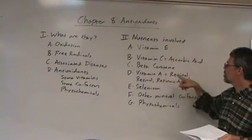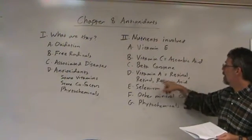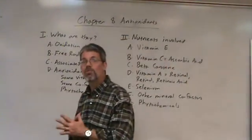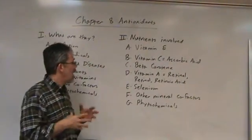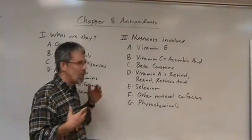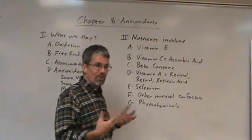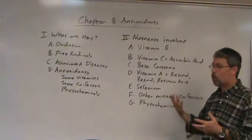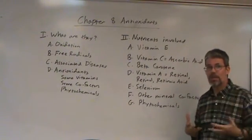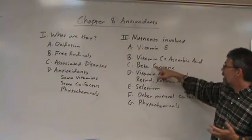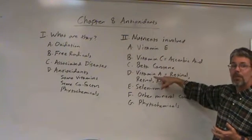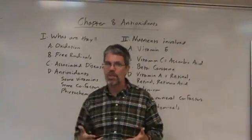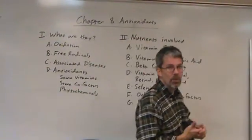Vitamin A, also known as retinol or retinoic acid, is involved in antioxidant function and also in vision. Vitamin A deficiency can lead to night blindness or even permanent blindness in severe cases. Vitamin A is also important for skin health and epithelial tissue health. Beta-carotene is a dietary source of vitamin A, but vitamin A is also found in pre-formed fashion in animal-derived foods — liver is particularly high in it.